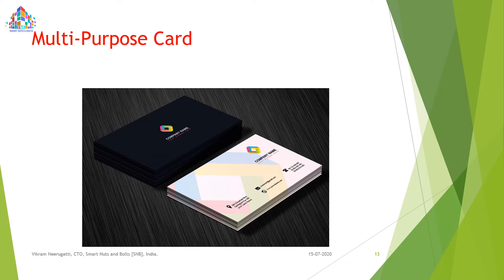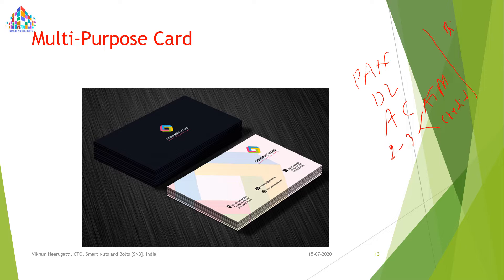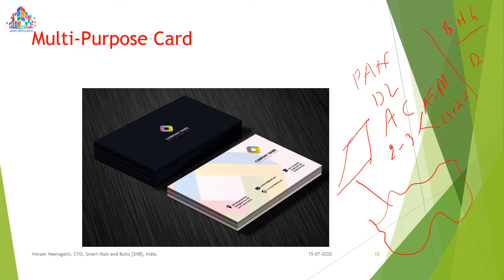First is a multipurpose card. Nowadays we carry many cards — PAN card, driving license, ATM cards, credit cards — from birth to death we carry many cards in our wallet. The idea here is all the cards are integrated in the cloud, and access is provided with only one card. With OTP, biometric, fingerprint, or facial recognition authentication, we can access any card from birth to death using just this one multipurpose card.